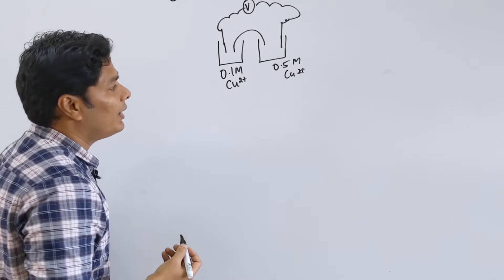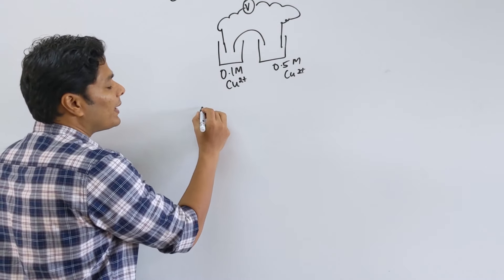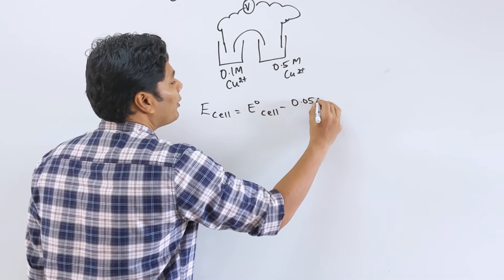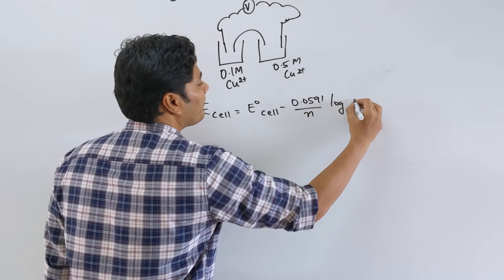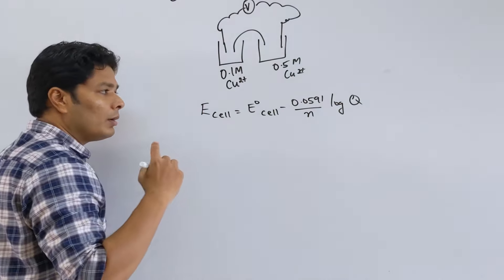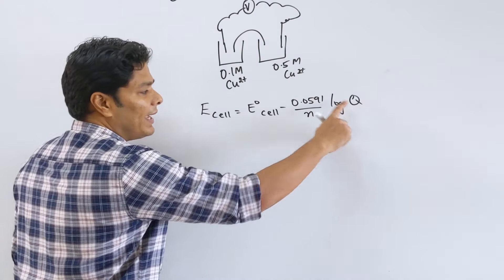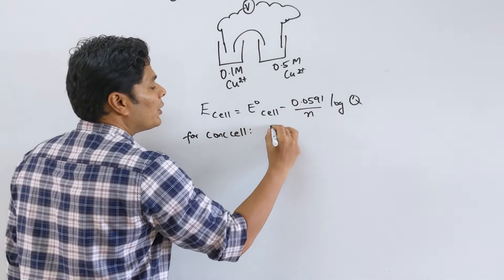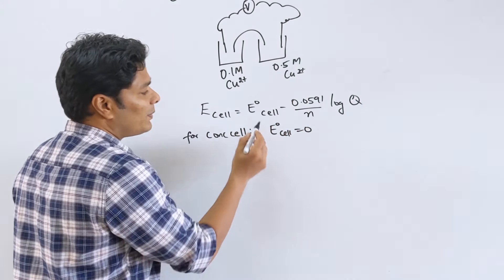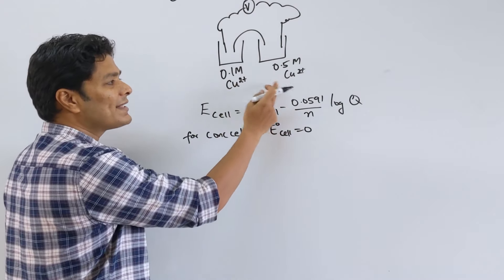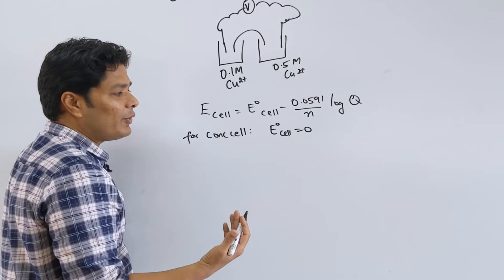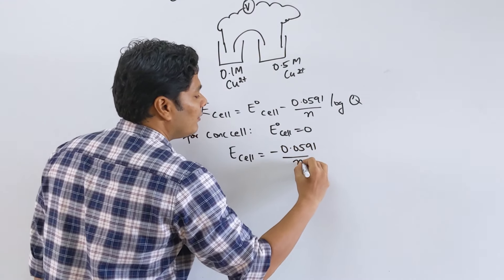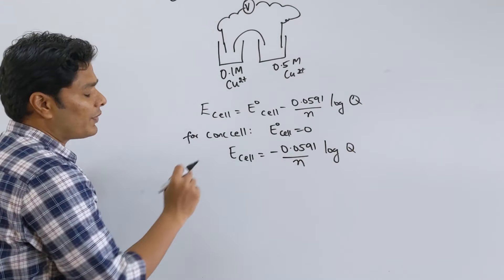A cell with the same species at differing concentrations is called a concentration cell. Concentration cells have one particular property: in the Nernst equation E_cell = E° cell − 0.0591/n × log Q, for a concentration cell E° cell = 0 — because E° cathode minus E° anode equals zero since both electrodes are the same material. So for a concentration cell: E_cell = −0.0591/n × log Q.